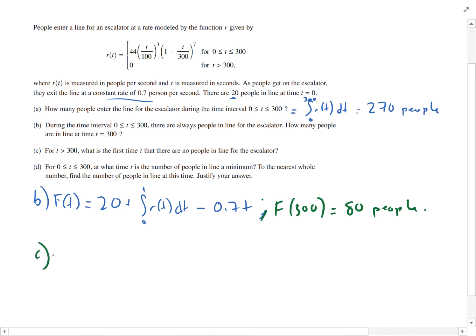For C, this is just a linear equation. R of T is only valid from 0 to T to 300. So for T greater than 300, you have 0 people in the line at 80 minus 0.7 T equals 0.